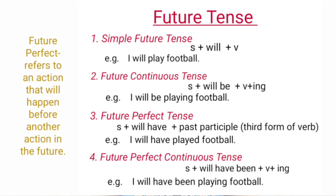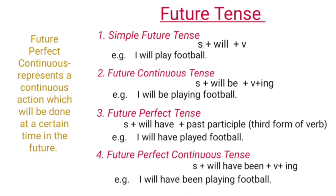Future perfect tense refers to an action that will happen before another action in the future. It is made up of Subject plus 'will have' plus past participle, or the third form of the verb. Example is 'I will have played football.'